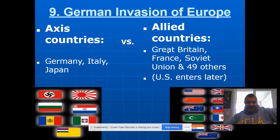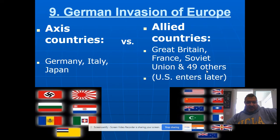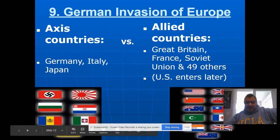The Allied countries are much more numerous: Britain, France, Soviet Union, and 49 others. Eventually, the U.S. enters December 8, 1941, the day after Pearl Harbor. The flags shown are America, Britain, and the Soviet Union.